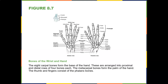The eight carpal bones form the base of the hand, arranged into proximal and distal rows. You need to know these. There's a mnemonic: 'Some lovers try positions that they can't handle.' Some is scaphoid, lovers is lunate, tri is triquetrium, positions is pisiform, that is trapezium, they is trapezoid, can't is capitate, and handle is the hamate. You definitely need to know those bones.